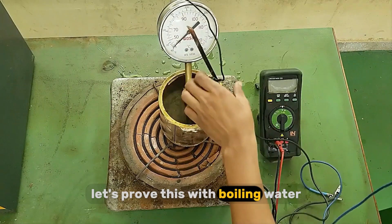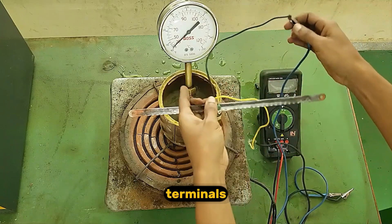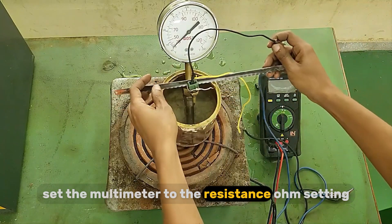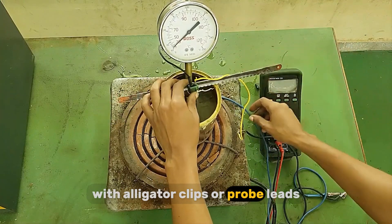Let's prove this with boiling water. Step 1: Connect your digital multimeter to the sensor terminals. Set the multimeter to the resistance ohms setting. Make sure your connections are secure with alligator clips or probe leads.